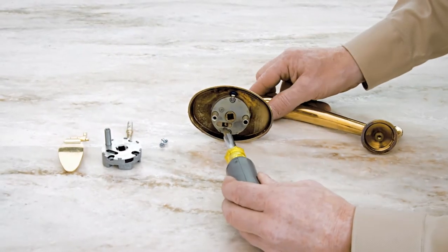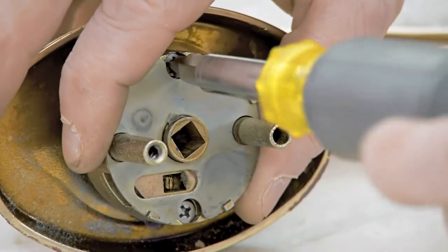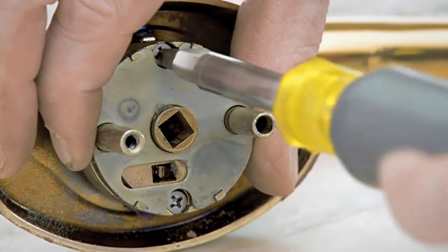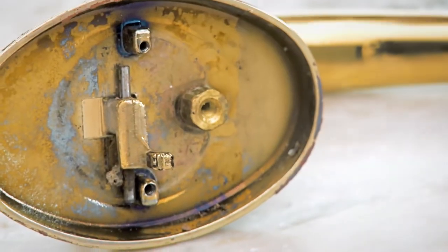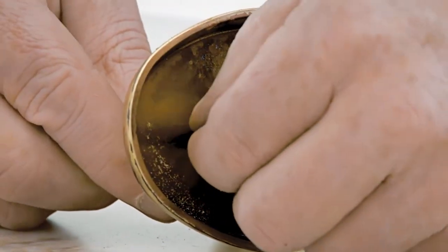Remove the number 6-32 by 7/16 inch screws that secure the thumb lift cartridge to the handle set. Discard the cartridge and the screws. Remove the thumb piece and discard it.